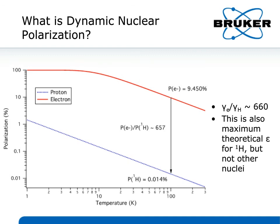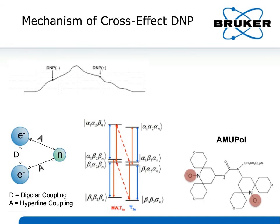And that number is also our maximum theoretical enhancement. So if we could transfer 100% of the polarization of the electrons, which are about 9.5% polarized at 600 megahertz, to the protons, we would achieve an enhancement of about 660. Now, the way this works — and as I mentioned, there are multiple DNP mechanisms — the most common is what's known as the cross effect. This commonly involves doping the sample with some sort of nitroxide biradical. A very common example is AMUPOL, seen on the right-hand side of the slide. These nitroxide biradicals represent a system of two electrons that are strongly dipolar coupled to one another, and each of those electrons is then strongly hyperfine or electron-nuclear coupled to one or more nearby nuclei, typically protons in the sample.